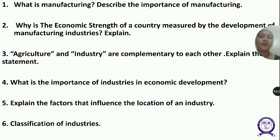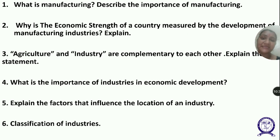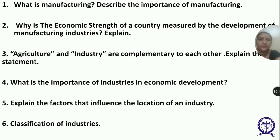The fourth classification is on the basis of ownership, divided into four types. First, public sector — owned and operated by government agencies like BHEL and SAIL. Second, private sector — owned by individuals or groups of individuals like Bajaj Auto and Amul factories. Third, joint sector — jointly run by the state and individuals, like Oil India Limited, which is jointly owned by public and private sectors.